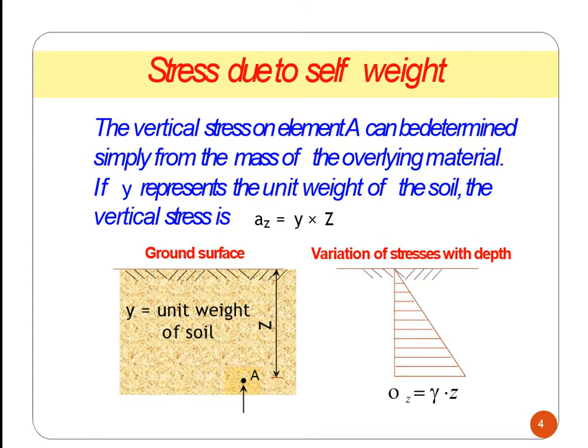The vertical stress on element A can be determined simply from the mass of the overlying material. If γ represents the unit weight of soil, the material has unit weight γ and depth Z. We have a pressure on a point — how much stress is acting on a point? The stress is γ × Z. This gives us the variation in stress with depth.